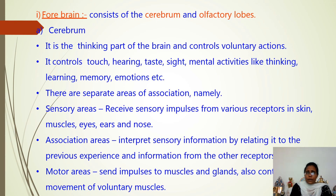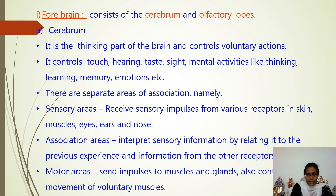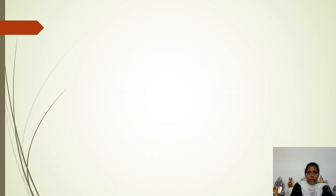The forebrain consists of the cerebrum, olfactory lobes, and hypothalamus. The cerebrum is the thinking part of the brain — it controls voluntary actions, touch, hearing, taste, sight, and mental activities like thinking, learning, memory, and emotions. The cerebrum has separate areas: sensory areas that receive sensory impulses from receptors in the skin, muscles, eyes, ears, and nose; association areas that interpret the information; and motor areas that send impulses to muscles and glands to cause movement. The olfactory lobes are club-shaped bodies responsible for detecting smell. The hypothalamus controls body temperature, and the urge of eating and drinking.